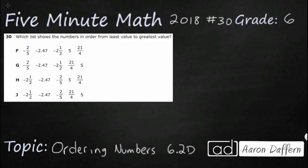So we are ordering numbers here and we simply need to find the list that goes from least to greatest, smallest to biggest. Now these numbers are all jumbled up but at least they are the same.